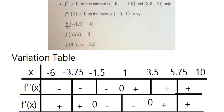The first derivative at minus 1.5 is equal to 0 — this is a critical point. Similarly, at 3.5 the first derivative should also be 0. So we have two critical points and one inflection point.